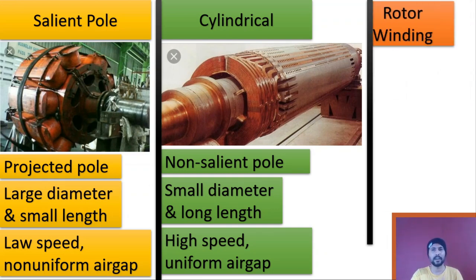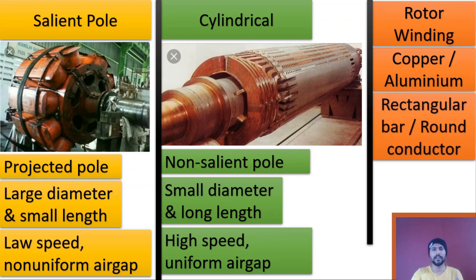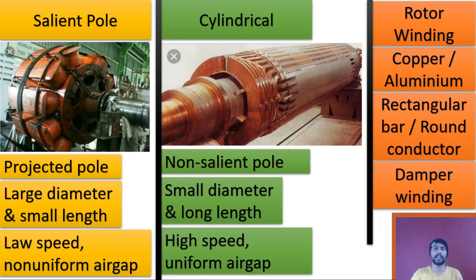Now let's see the rotor winding. Rotor winding is basically made up of copper or aluminium material; generally copper is preferred over aluminium. For large machines the winding is done with rectangular bar copper conductors, and for smaller machines a rounded copper conductor is used. Additionally, there is a separate winding known as damper winding in the rotor. The purpose of this damper winding is to provide starting torque or to reduce torque pulsation. A separate video with animation showing how damper winding achieves these tasks is linked in the description.